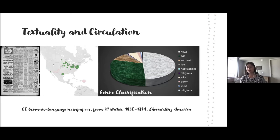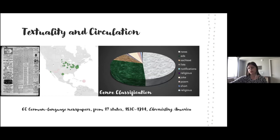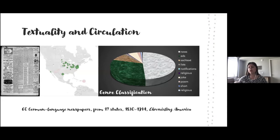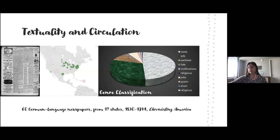First of all, computationally classifying texts seeks to better understand the nature and the role of genres, their similarities and anomalies, and how they relate to migrant groups that differ in sex, gender, age, or class. Second, the objective is to create a digital archive of genre-classified reprinted texts and make it available for further research in the field.